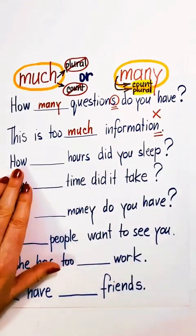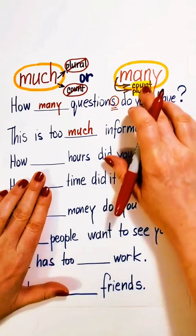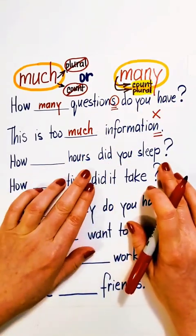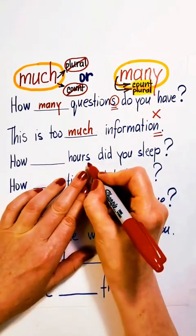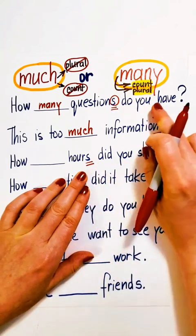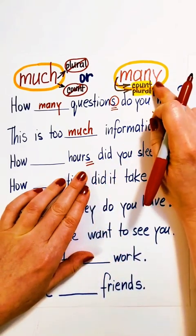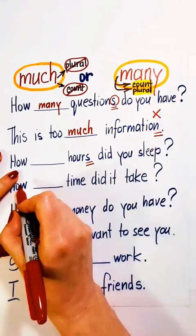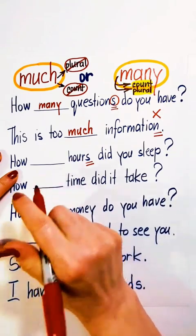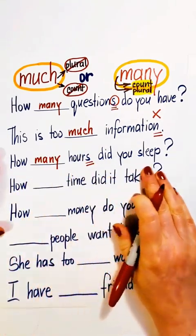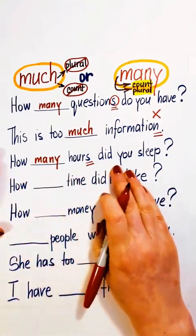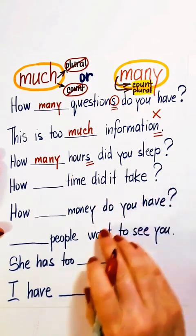How much or how many hours did you sleep? Hours is a count noun. It has a plural form. Use many. How many hours did you sleep?